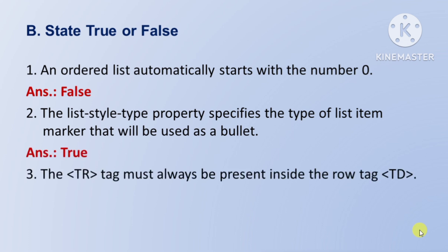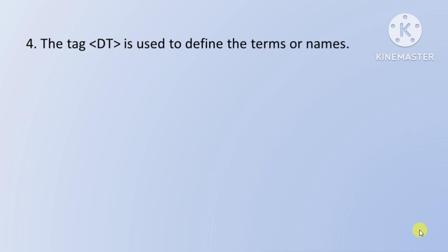Next question: the tr tag must always be present inside the row tag td — tr tag ko hamesha row tag td ke inside present hona chahiye. Toh yeh false hai. Next question: the tag dt is used to define the terms or names — tag dt ka prayog kiya jata hai terms or names ko define karne ke liye. Toh yeh true hai.